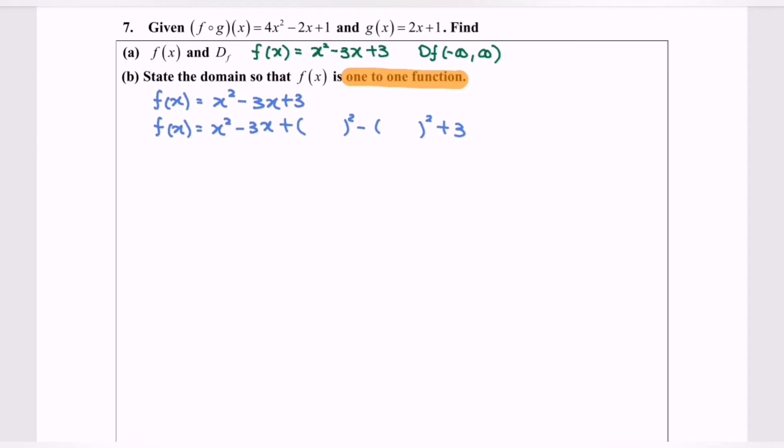By referring to negative 3x, then we will have negative 3 over 2, negative 3 over 2. Simplify. So x minus 3 over 2 bracket squared minus 9 over 4 plus 3.